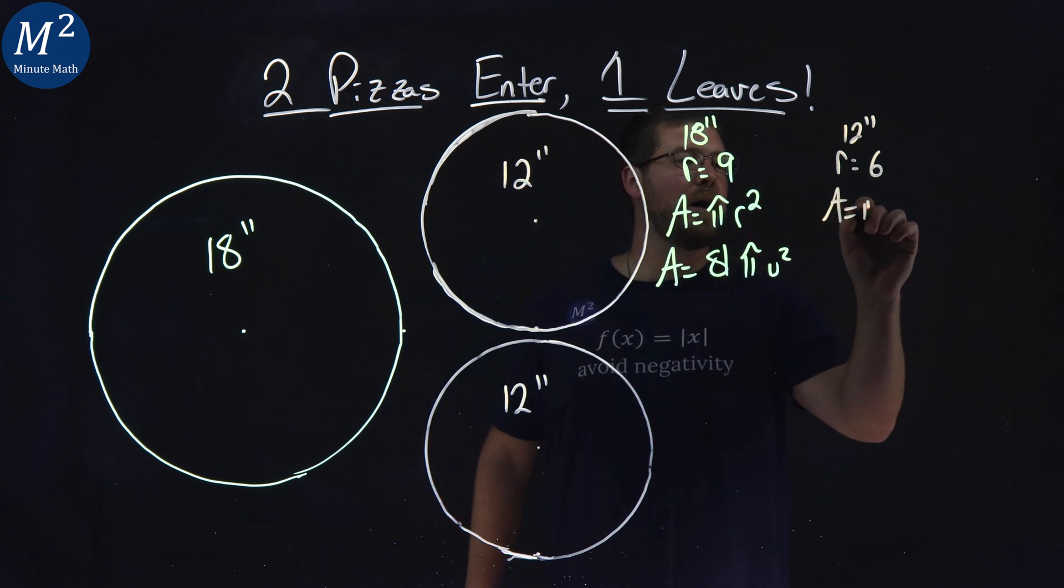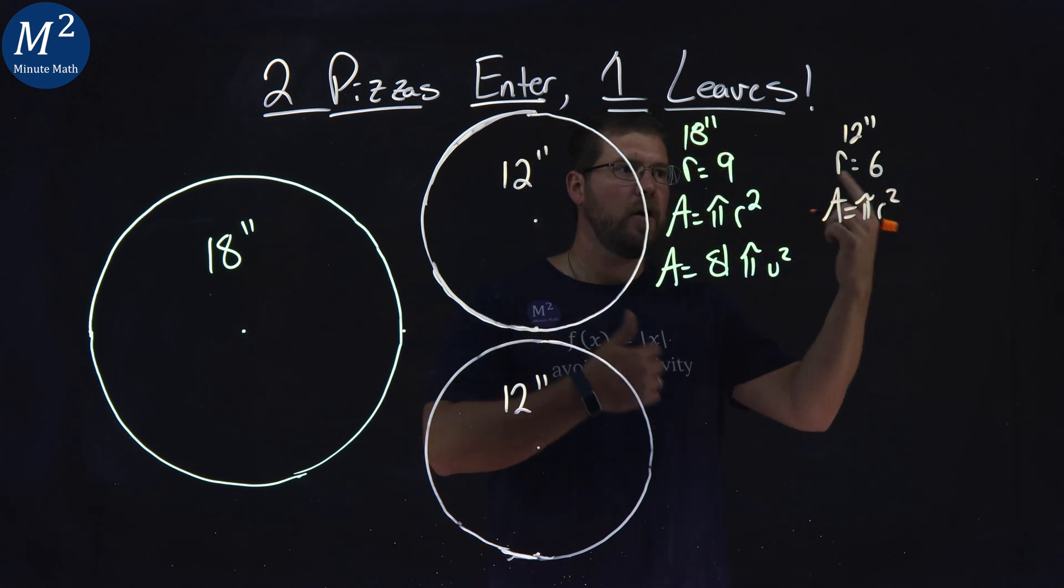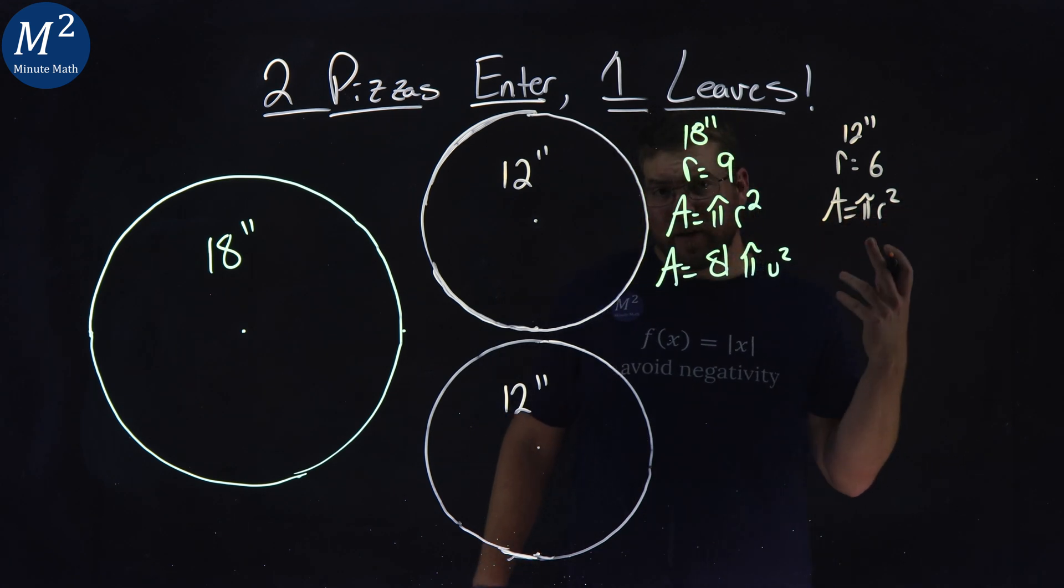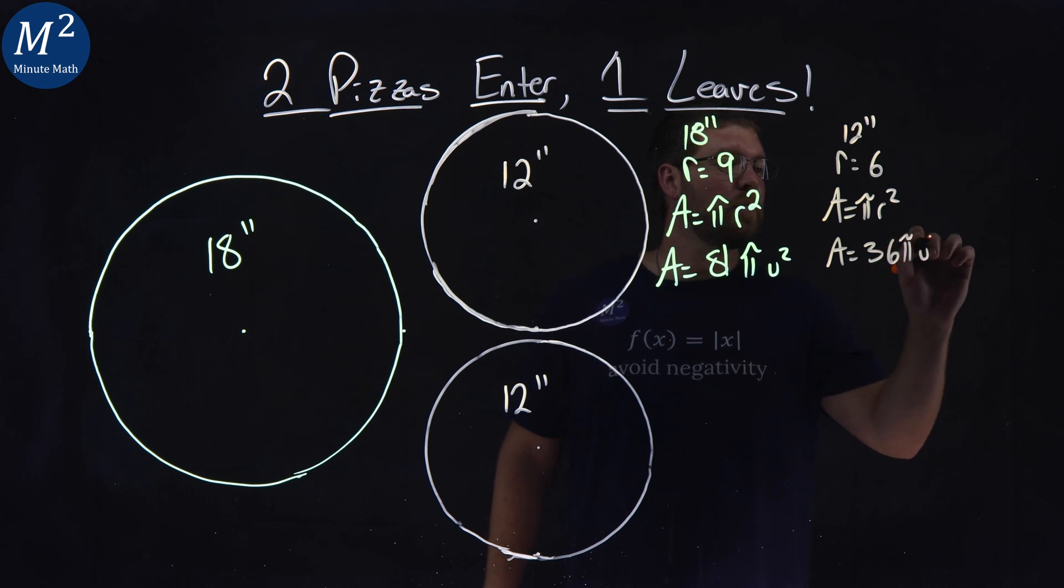Area equals pi r squared. Again, radius being 6, we square that. Area equals 36 pi units squared.